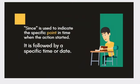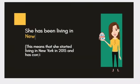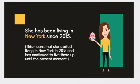Since is used to indicate the specific point in time when the action started. It is followed by a specific time or date. For example: 'She has been living in New York since 2015.' This means that she started living in New York in 2015 and has continued to live there up until the present moment.